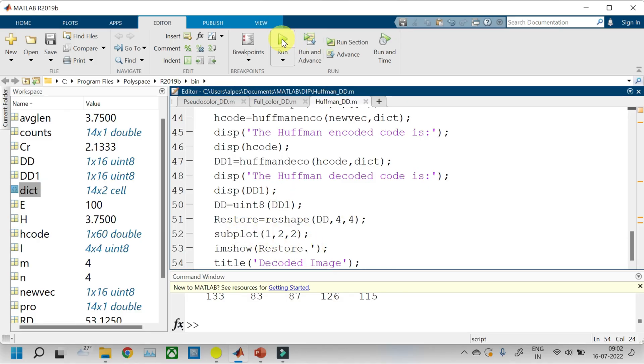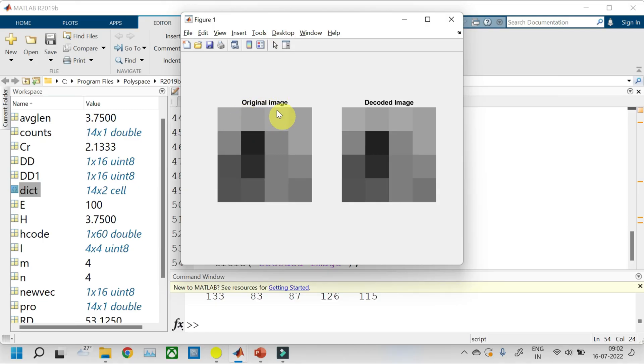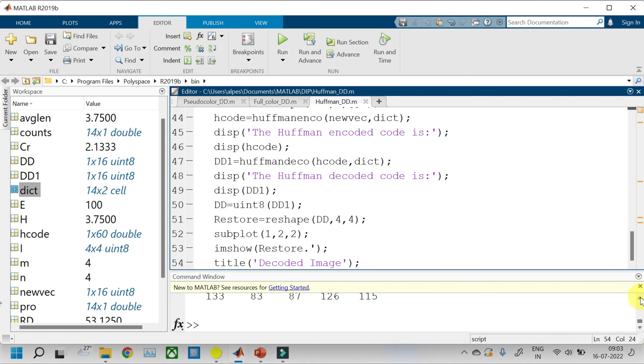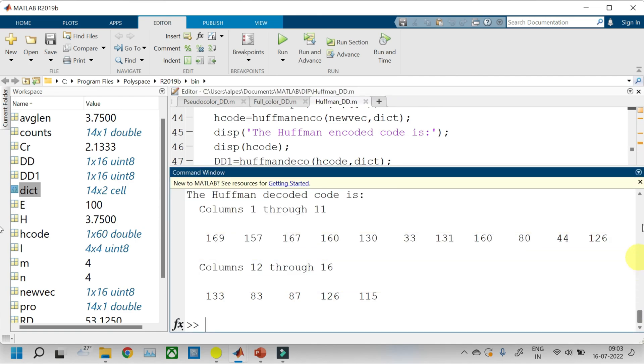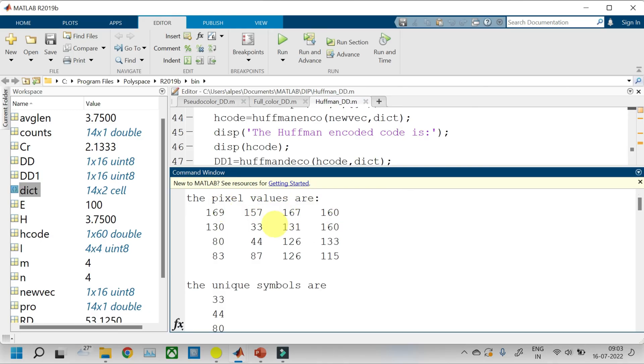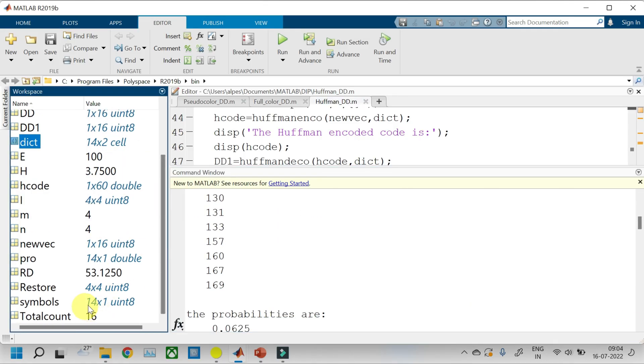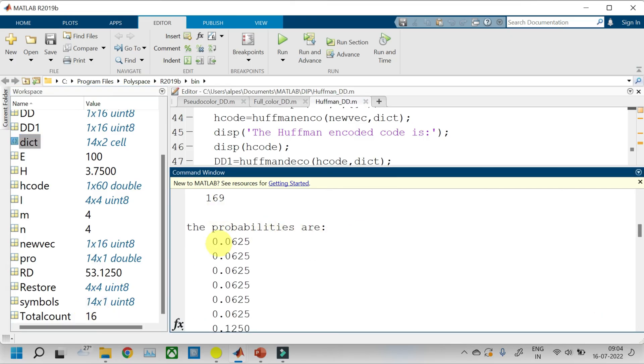So, let us run the program and see the output. This is our original cameraman image which we have resized to 4x4 pixels. And this is the decoded image which is the same as the original image. Now, in the command window, we can see different values. These are the pixel values of 4x4 cameraman image. The unique symbols are displayed next. Here the repeating symbols will not be shown. For example, 126 is occurring 2 times. So, the number of unique symbols are 14. The probabilities of occurrence of these unique symbols are displayed next.